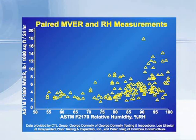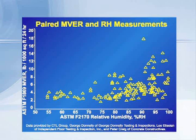First of all, if you look at the dozen or so points all the way over on the right-hand side at the top, you see that any calcium chloride kit value above about 10 pounds tends to indicate there's greater than 90 percent humidity in the slab. Now, the opposite is not true, which we'll talk about in just a minute. But what I take away from this work is that if you do get a very high calcium chloride kit value — let's say above 10 pounds — the floor is wet and the internal relative humidity will very likely be high.